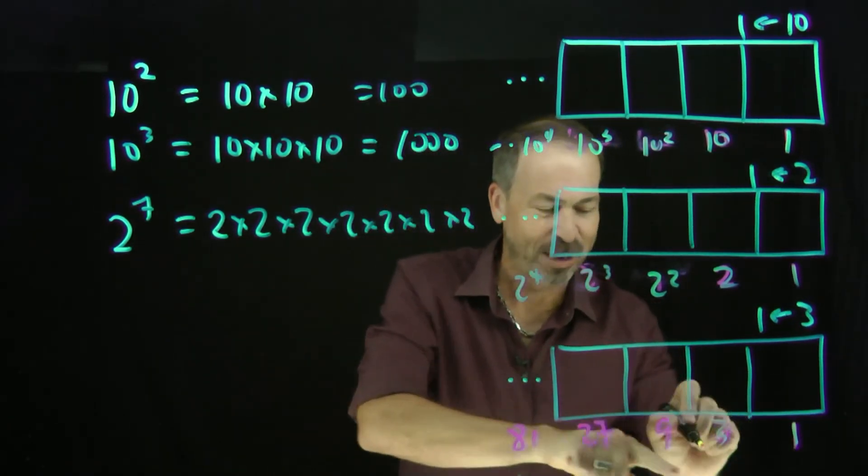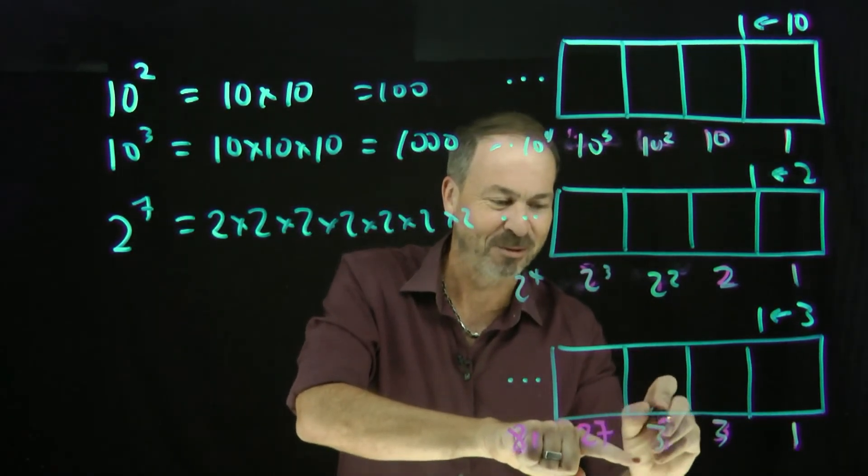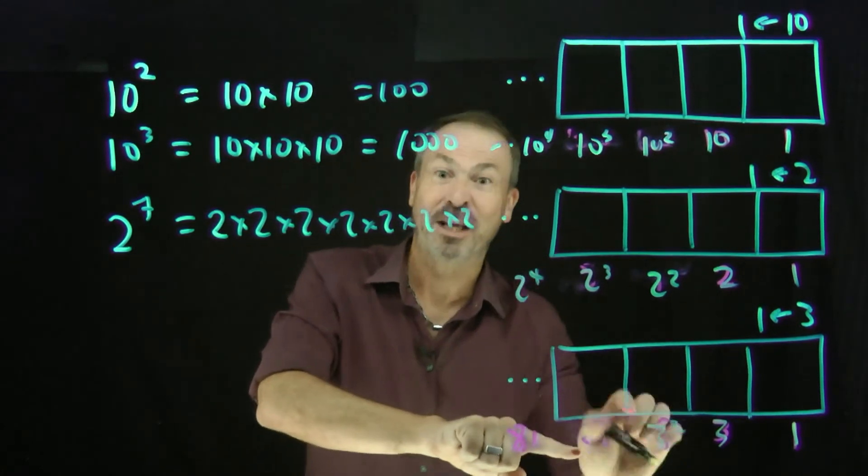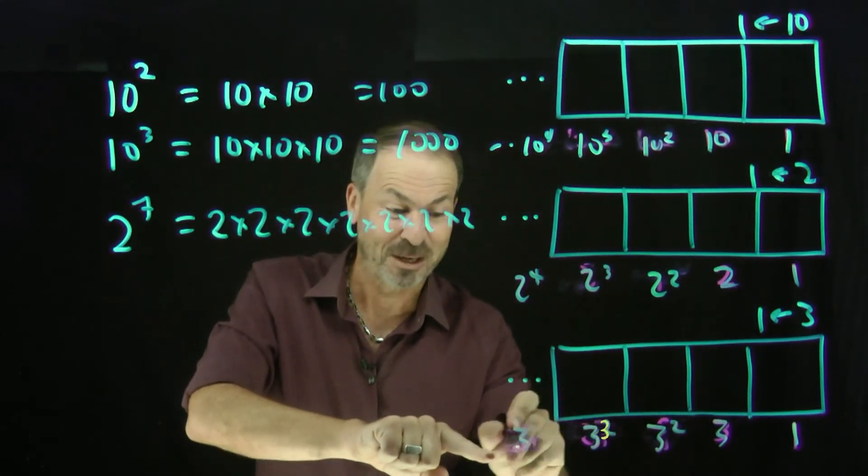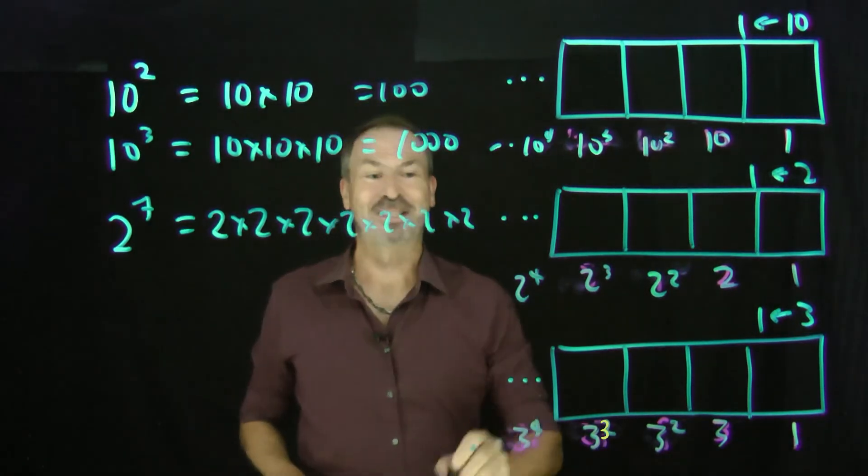Here's 1, 3. 9 is really 3 times 3, 3 squared. 27 is really 3 times 3 times 3, 3 cubed. That's really 3 times 3 times 3 times 3, 3 to the fourth, and so on.